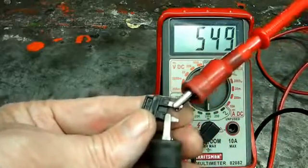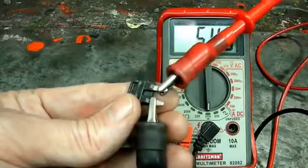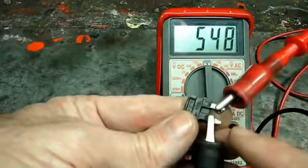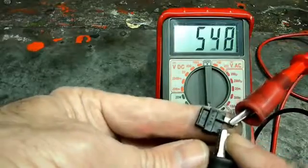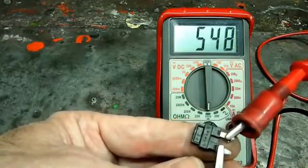Now if it was any number other than what you saw, if both of them read one, well then it would be open and that would be no good. So that's how you check a diode.